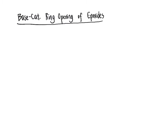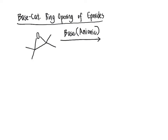In looking at the base catalyzed ring opening of epoxides, the general reaction starts with our epoxide reacting under basic conditions with a base. That base is typically an anionic base. There are a few exceptions, such as the reaction with ammonia, but in most cases we're looking at anionic bases, such as metal alkoxides (MOR) or metal hydroxides like sodium hydroxide.